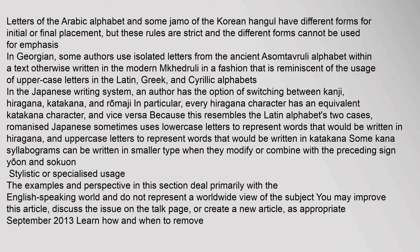In Georgian, some authors use isolated letters from the ancient Asomtavruli alphabet within a text otherwise written in the modern Mkhedruli in a fashion reminiscent of the usage of uppercase letters in the Latin, Greek, and Cyrillic alphabets. In the Japanese writing system, an author has the option of switching between kanji, hiragana, katakana, and romaji. Because this resembles the Latin alphabet's two cases, romanized Japanese sometimes uses lowercase letters to represent words written in hiragana and uppercase letters for words written in katakana.